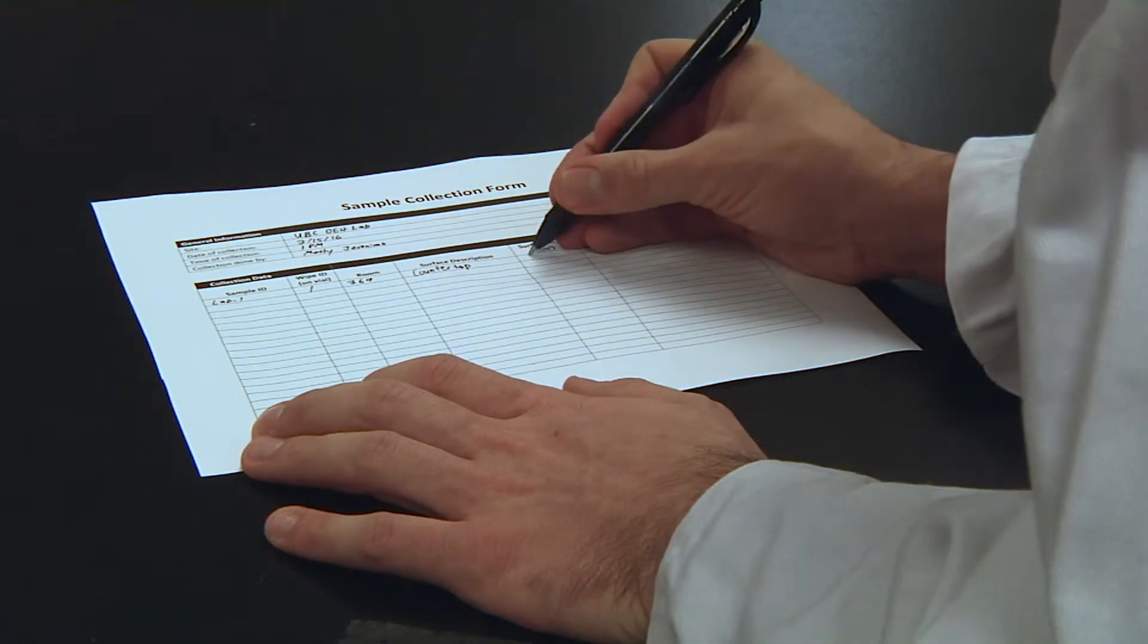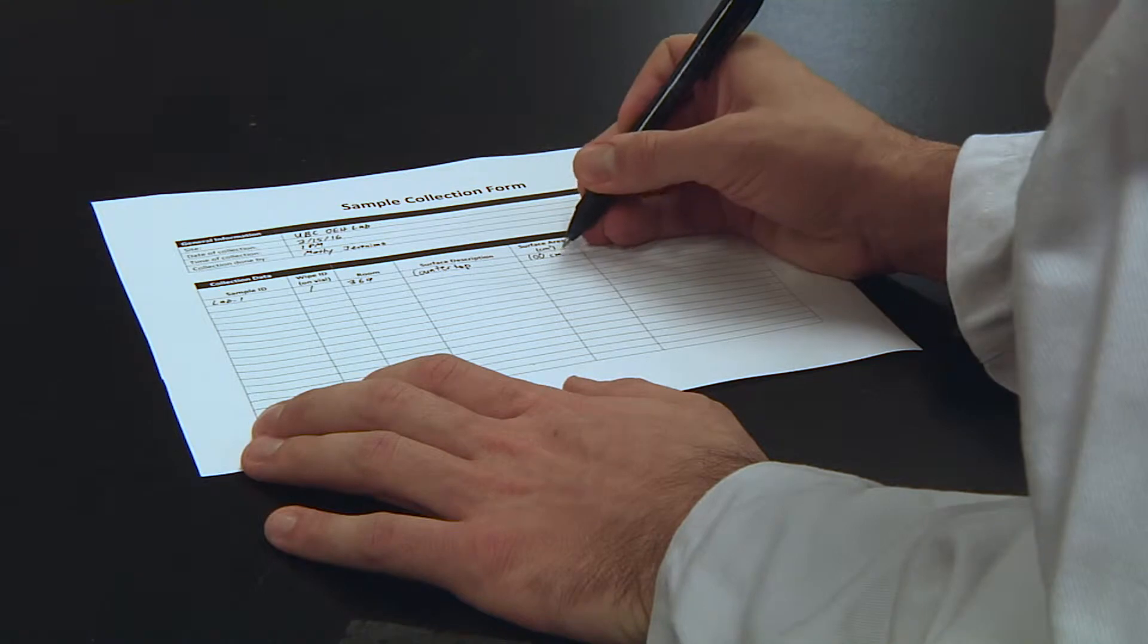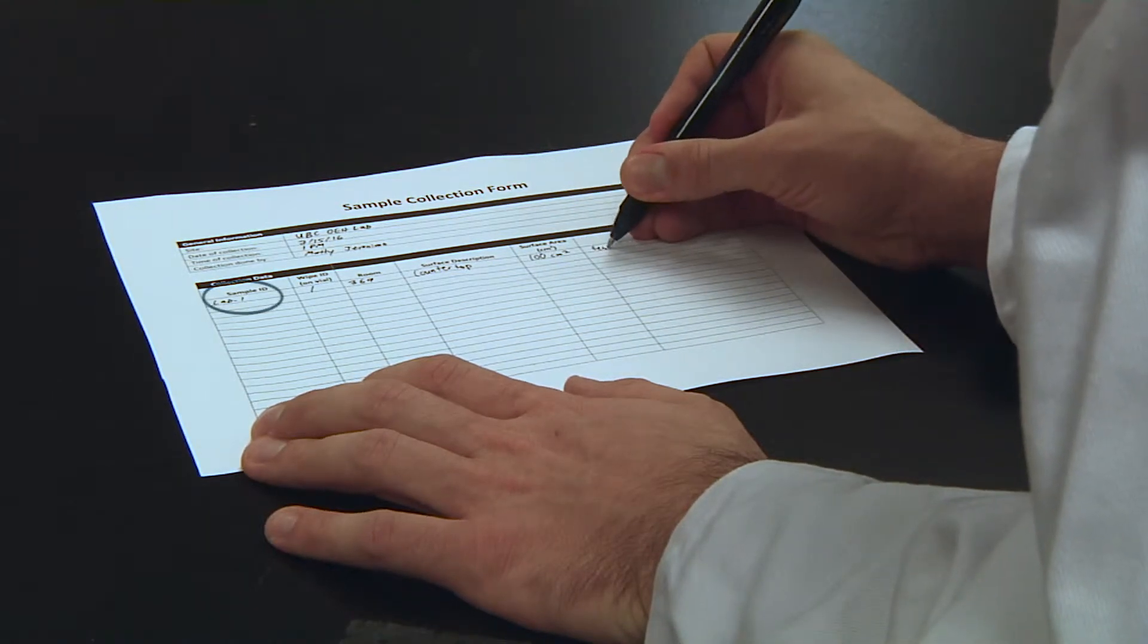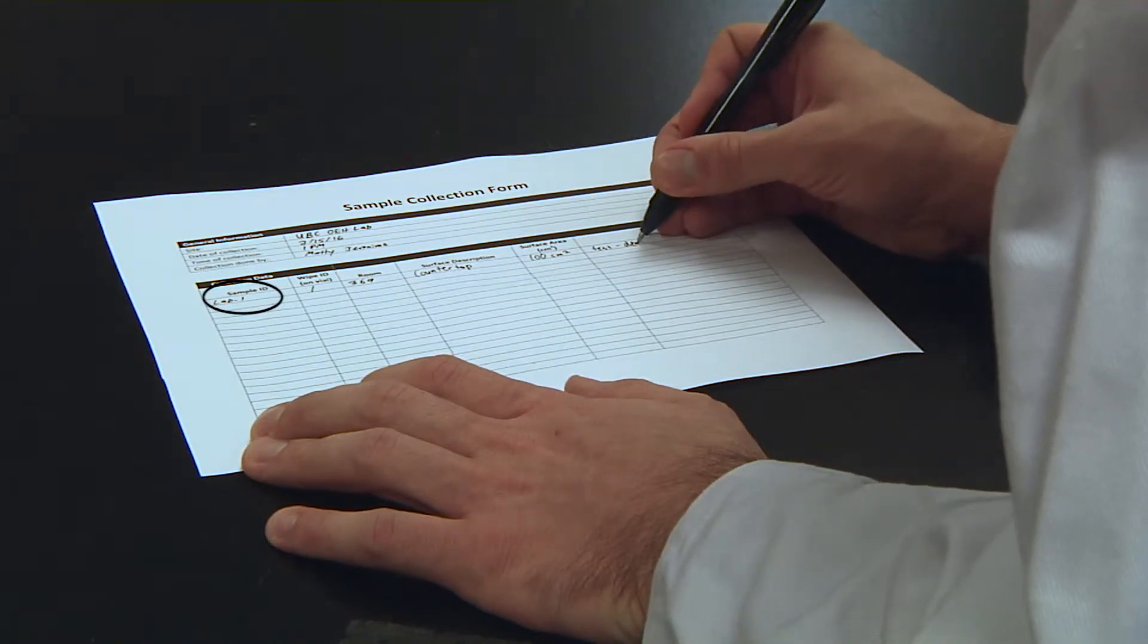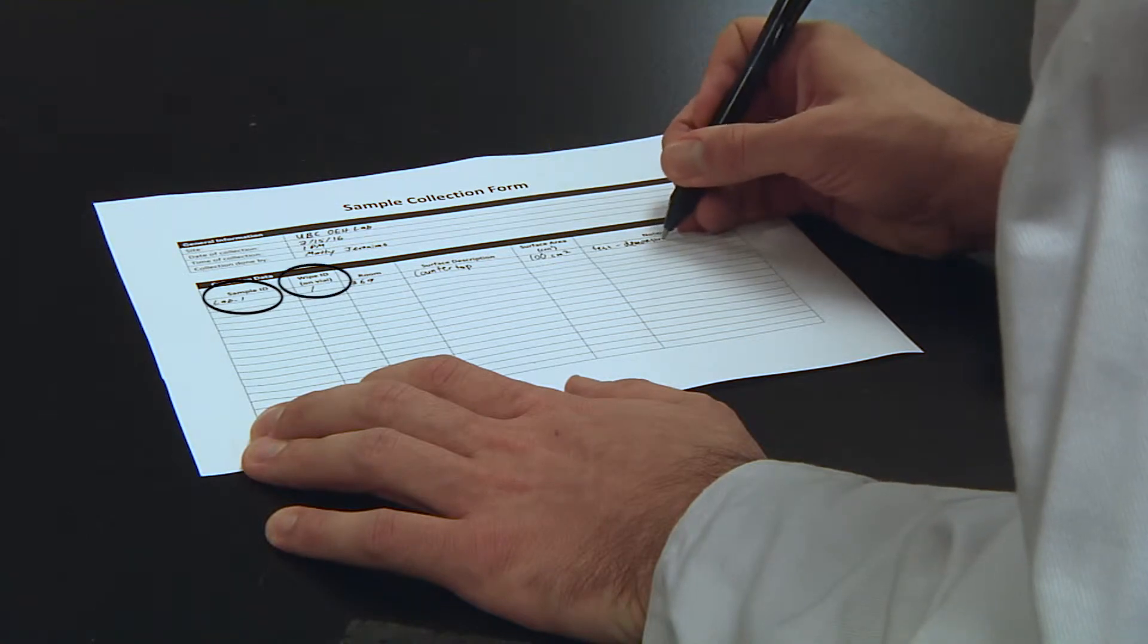Make sure your sample information is noted on the collection form. Label the sample for your own reference in the sample ID column and note the wipe ID written on the vial in the wipe ID column.